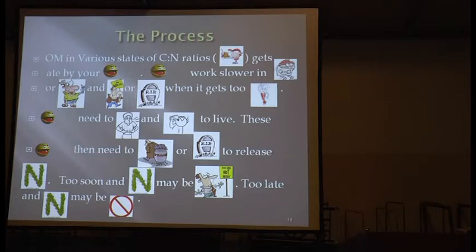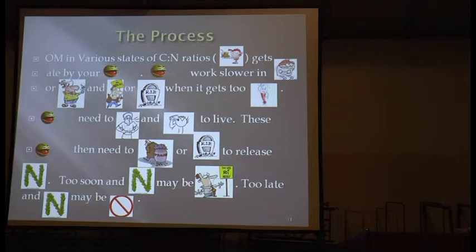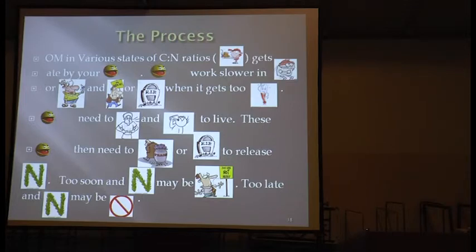If nitrogen is released too soon, it may be lost — not there when you need it. If it's too late, it may also be lost or unavailable for your cash crop. That's why it's important to consider your crop and what you want to follow up with, what you're going to plant as a cover crop, and what carbon-nitrogen ratios you're dealing with. Or if you're going with a cropping cycle — one crop then another — it's important to understand these things because this balance will help you reduce inputs of the most expensive fertilizer, which is nitrogen.